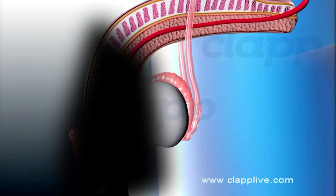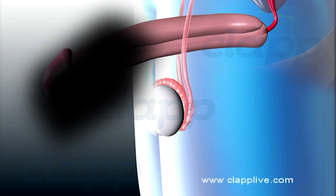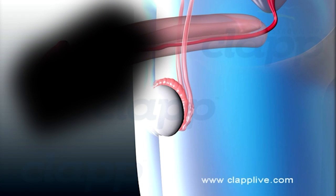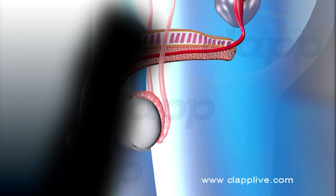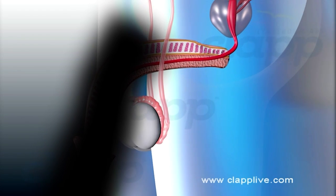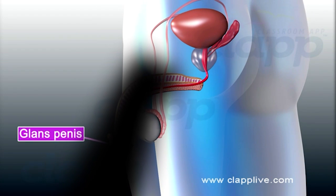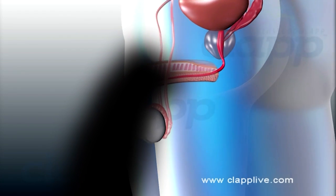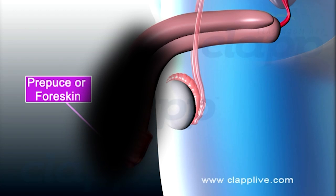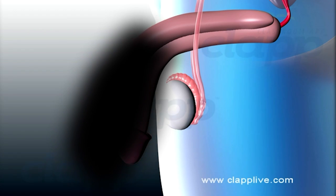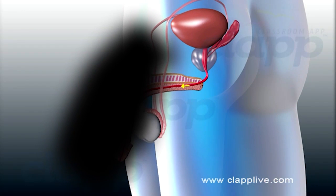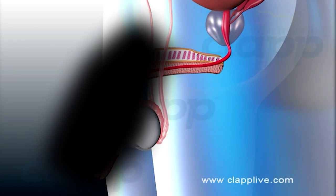During sexual excitement, arterial blood rushes to these tissues and causes erection of the penis. The corpus spongiosum is expanded to form a highly sensitive conical structure near the tip of the penis termed the glans penis. This is covered by a retractable fold of skin called the prepuce or foreskin. The urethra extends through the penis and opens out through an opening called the urethral meatus.